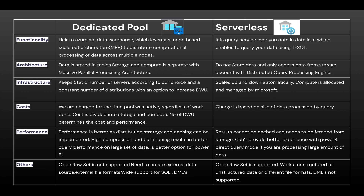For infrastructure, in a dedicated pool you have to define the number of nodes — the number of servers — yourself. When you create a dedicated pool, you define the configurations including how many servers you want, and that is where you define the Data Warehouse Units (DWU). Based on your choice, the dedicated pool spins up the machines with the appropriate configurations. In serverless, it automatically scales up and down — compute is allocated and managed by Microsoft. When your workload is high, Microsoft automatically provisions machines; when it is low, they are released.